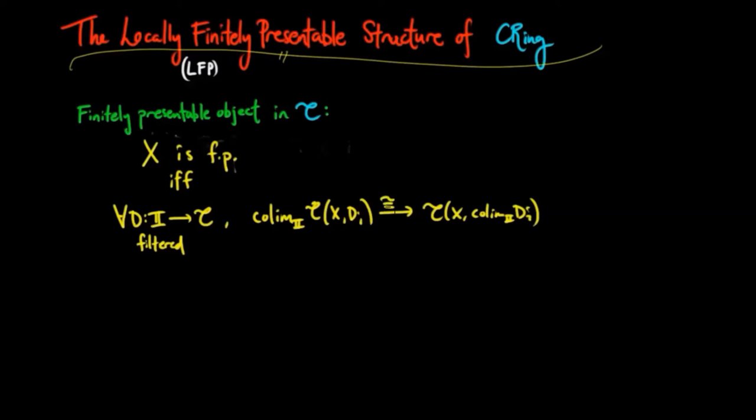In other words, this is saying that given any morphism F from X to the co-limit of DI, there exists this factorization through one of these DI's. You can think of this as X being finitely generated, that there's these finite generators that get exhausted in one of these DI's.